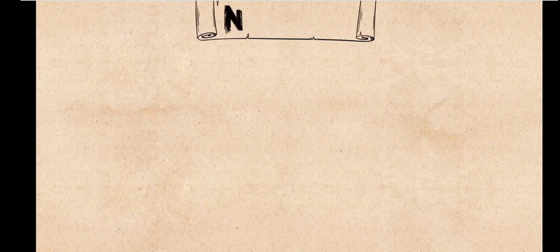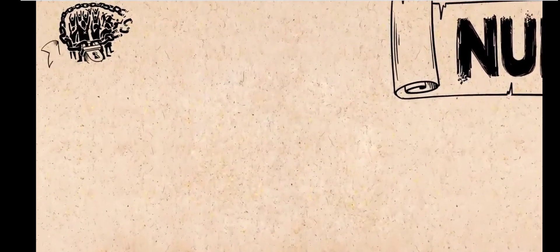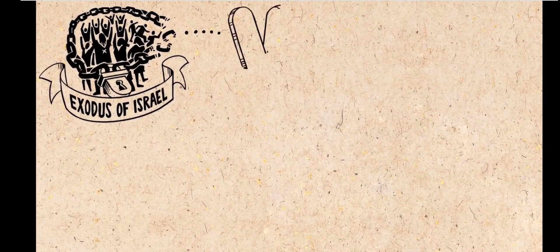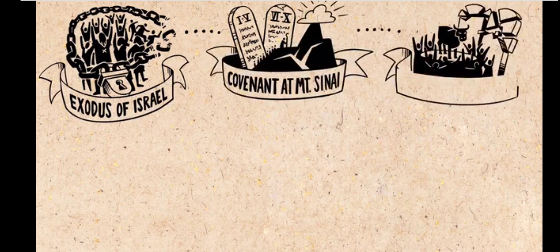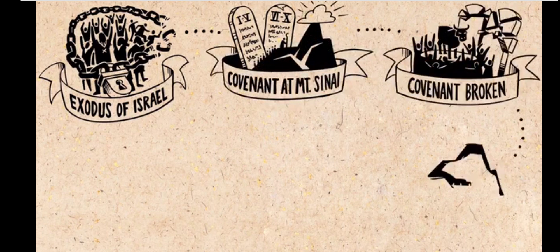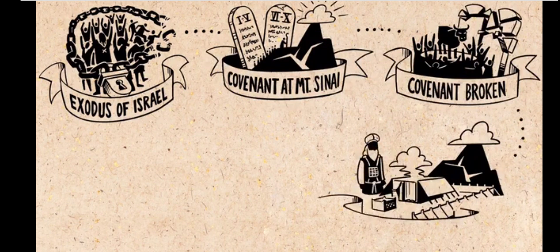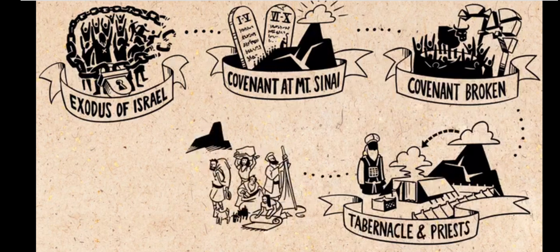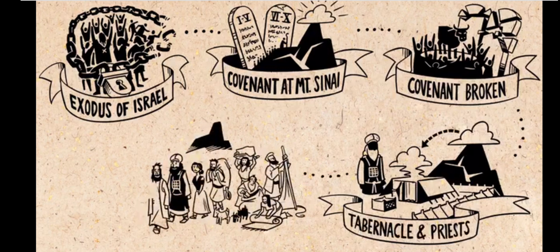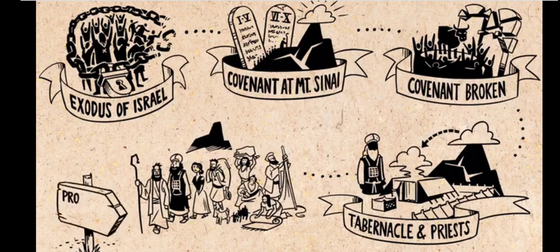The Book of Numbers. This fourth book of the Bible carries forward the story of Israel after their exodus from slavery in Egypt. God had brought them to Mount Sinai and he entered into a covenant with them there. And despite Israel's rebellion, God had graciously provided a way for Israel to live near his holy presence in the tabernacle. So the Book of Numbers begins as Israel wraps up their one year stay at Mount Sinai and they head out into the wilderness on their way to the land that God promised Abraham.